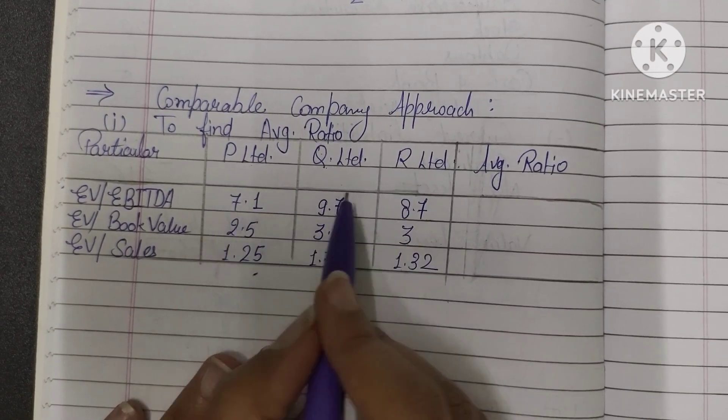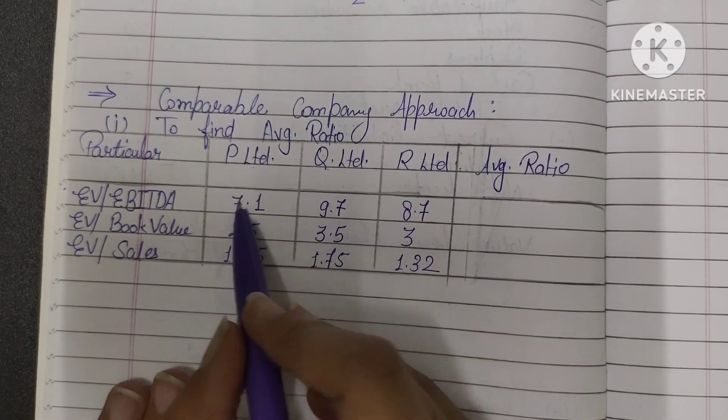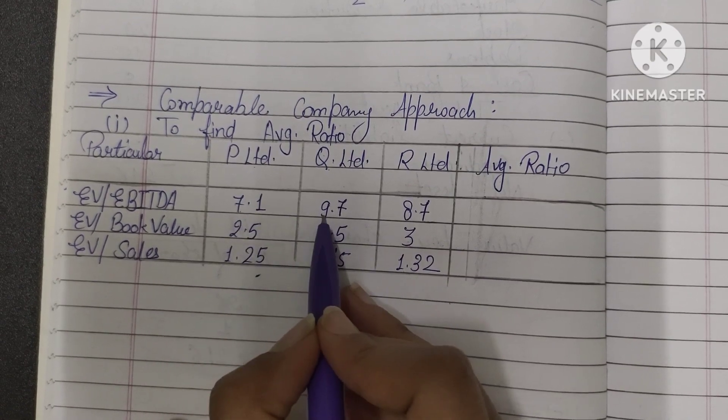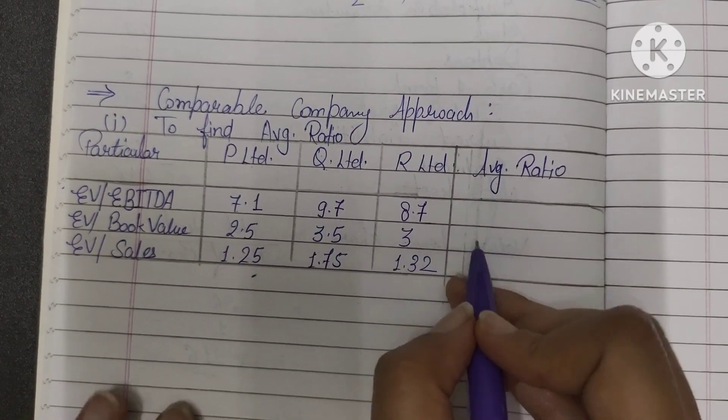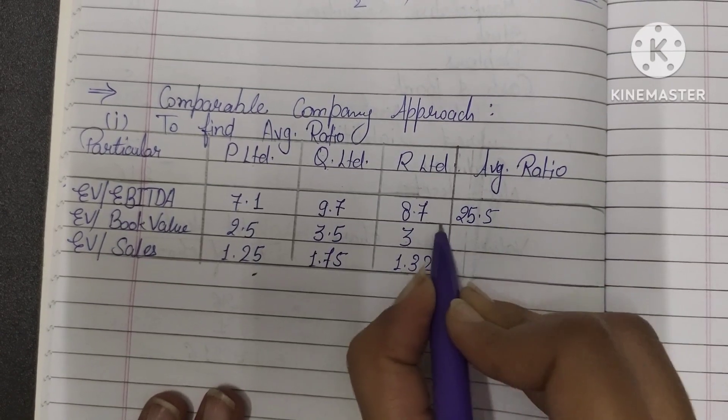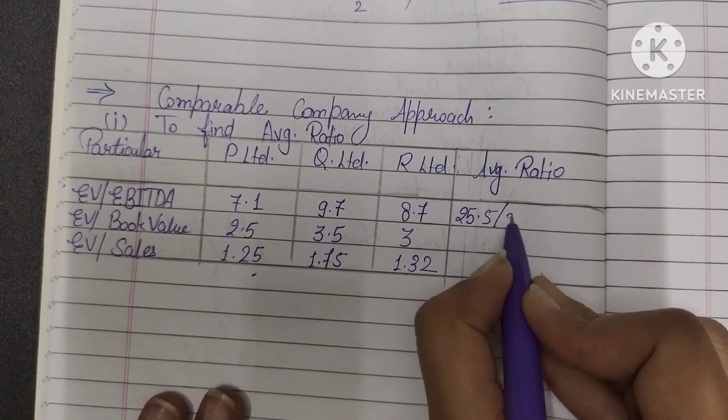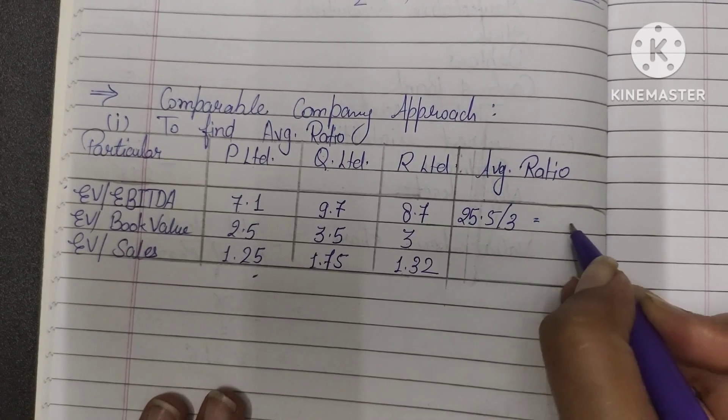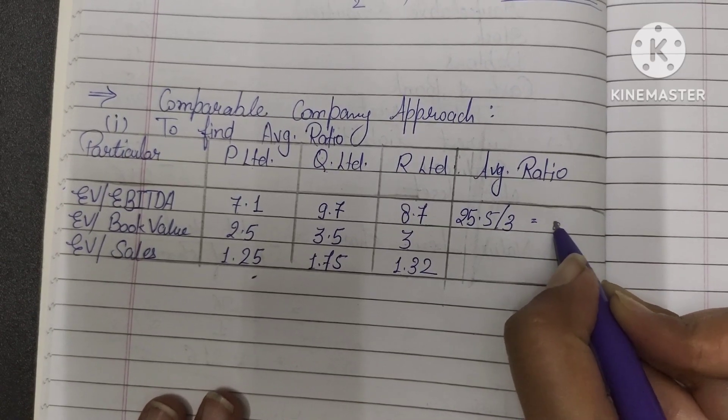P Limited, Q Limited, R Limited's values, we'll total and divide by 3. So 7.1 plus 9.7 plus 8.7, it is 25.5 total. Now what will we do? Divide by 3. So average ratio, how much will it be? It is 8.5. Check or you can calculate from calculator.